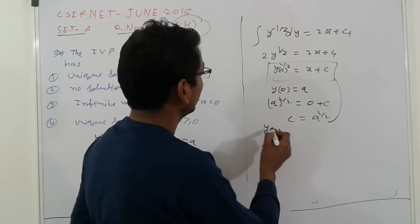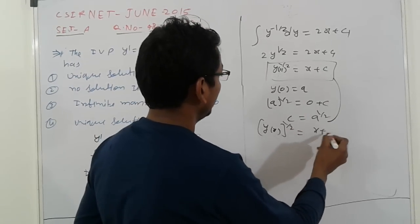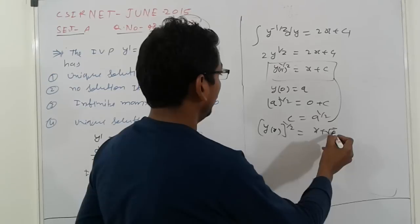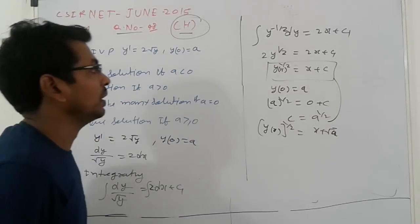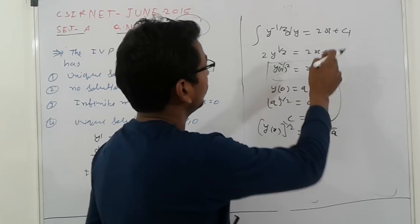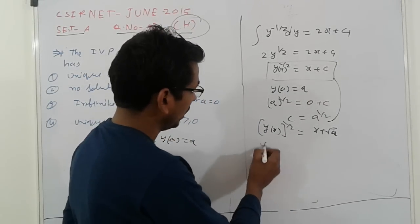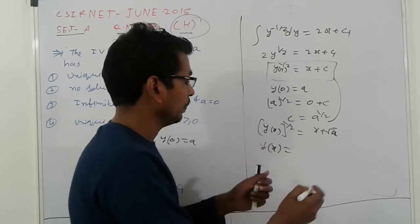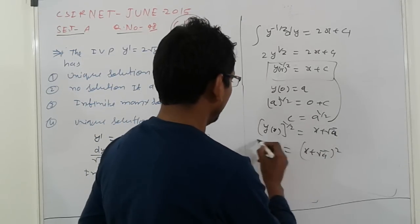So y(x)^(1/2) = x + √a, which means y(x) = (x + √a)².